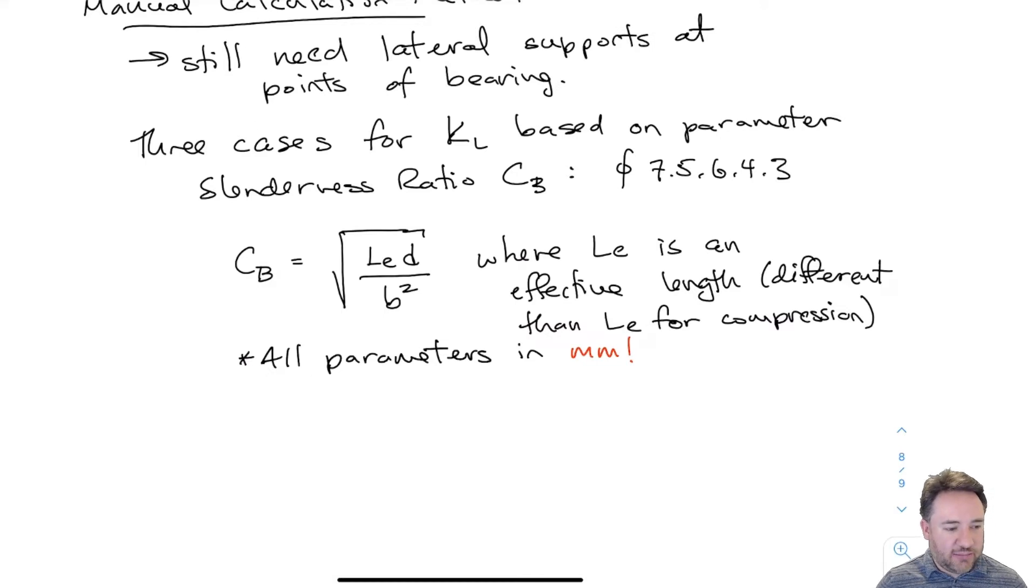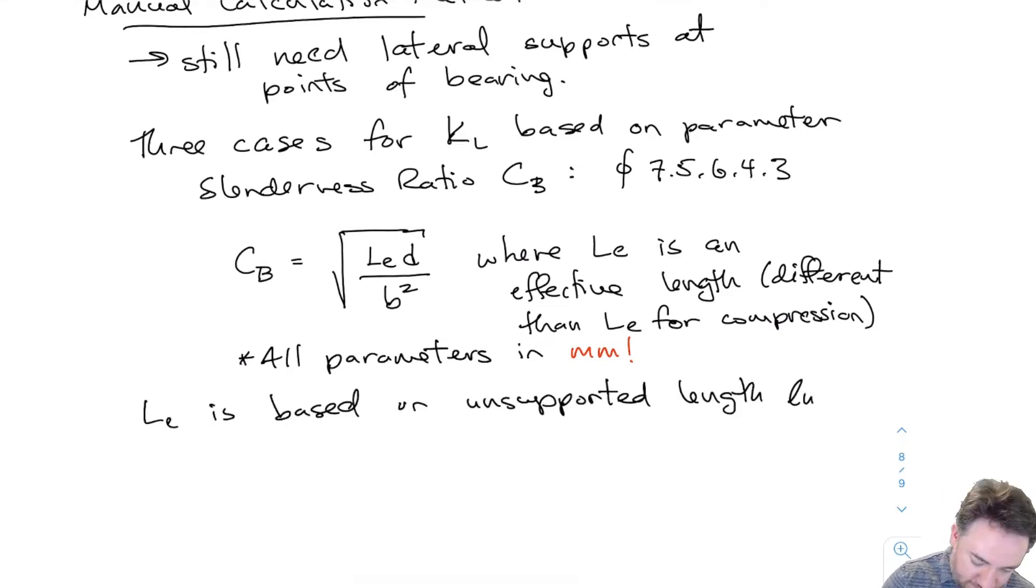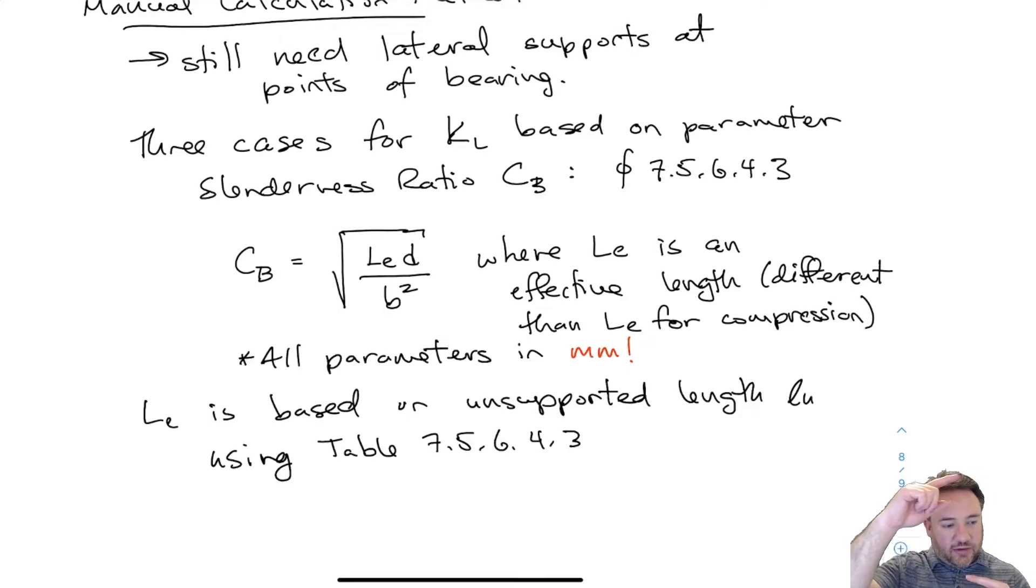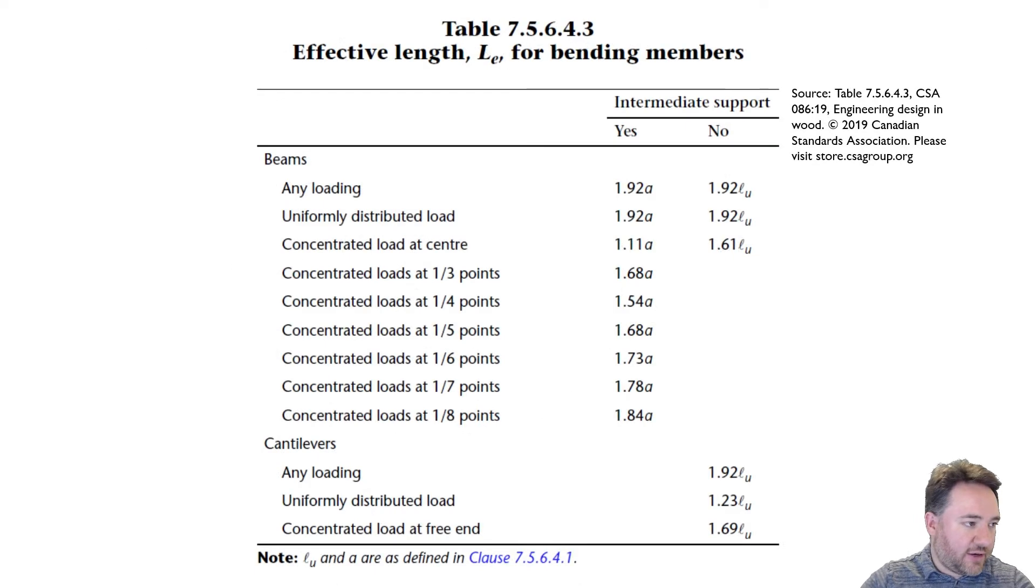This LE is based on unsupported length, just like for columns. Table 7.5.6.4.3 gives us the effective length, and you can see it's always some number multiplied by either our unsupported length LU or a purlin spacing A, which is the distance between lateral support points on a beam.